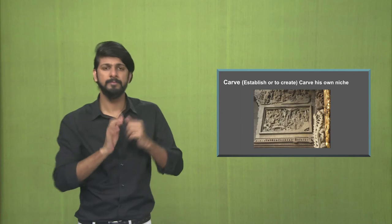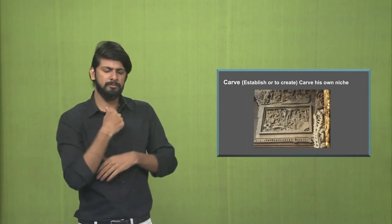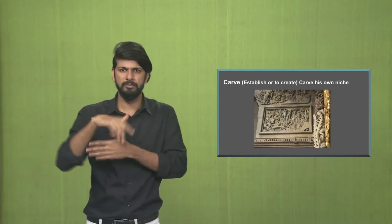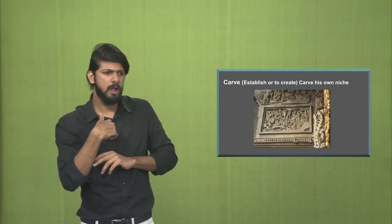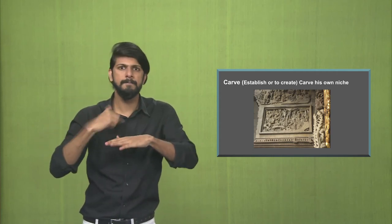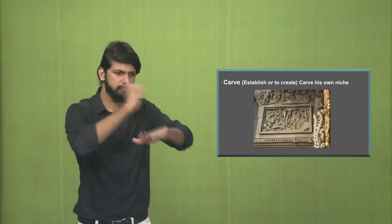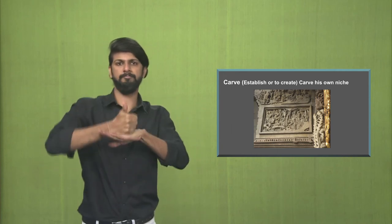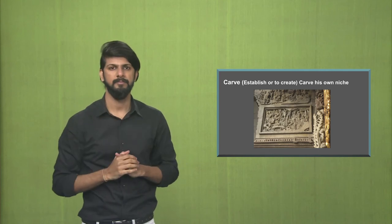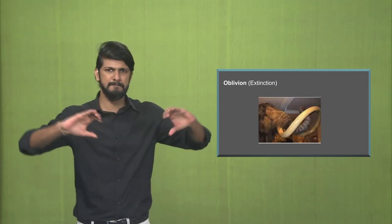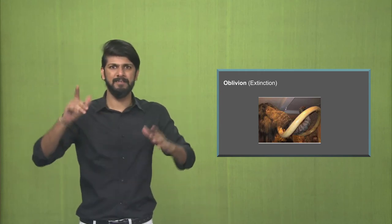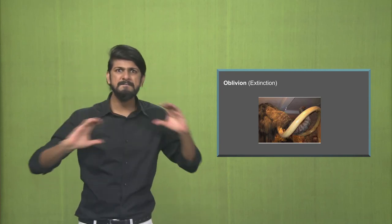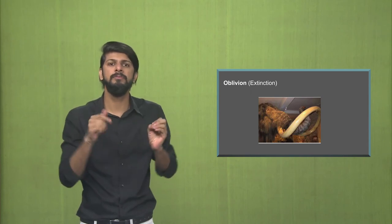Carve has two meanings. The first is to carve something — to use pointed objects and then depict something in 3D. The second is to establish or create, to carve one's own niche, meaning to establish something. Oblivion or extinction: the photo here shows a woolly mammoth which is extinct — they are no more. That is the meaning of oblivion or extinction.